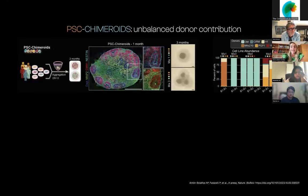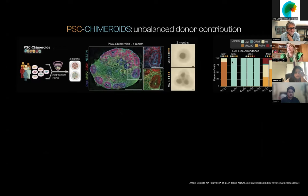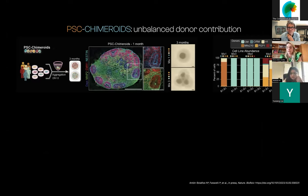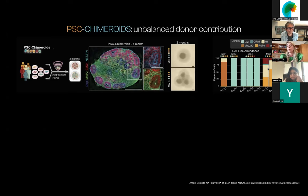One of the first experiments we did — thinking naively that it was going to be easy, but it was not — we took pluripotent stem cells from different donors and put them in the same entity, a chimeroid. But when we did low-passage whole genome sequencing with Census-seq, we observed that specific donors would totally take over the culture. If you removed that donor, another one took over. So it was a system that was not sustainable — you cannot put hundreds of donors in because you are going to lose them.